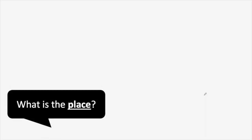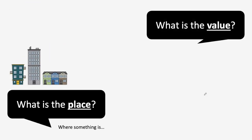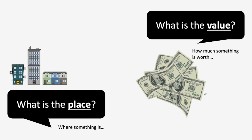Okay, friends. Today, when you're thinking about three-digit numbers, don't forget we can ask two questions. The first question we can ask is: what is the place? When we're talking about place, we're talking about where something is — just like if I asked you where you are, you could tell me you're at home. The second question we can ask is: what is the value? When we're talking about value, we're talking about how much something is worth. We can always think about money, because different bills and different coins are worth different amounts.